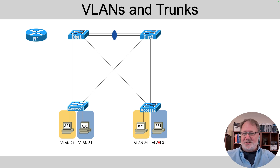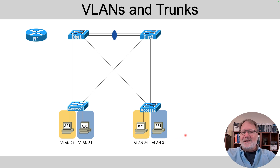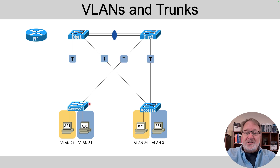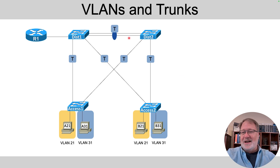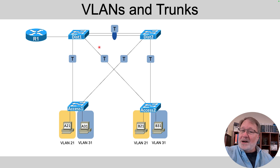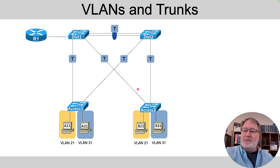So the endpoint devices are in two different VLANs. Between the switches, we want all those links to trunk — indicated by the T on the diagram. We also want to trunk on the link between the two distribution switches, and as it's drawn with two links in a loop, that implies we want an EtherChannel there. Any link between two switches, we want them to trunk.